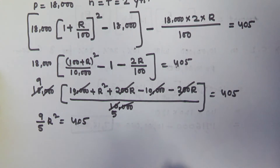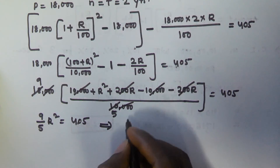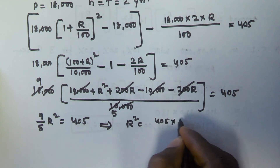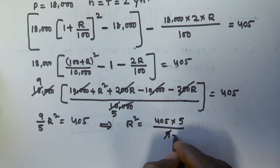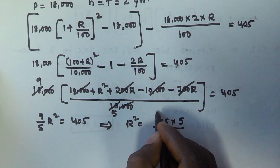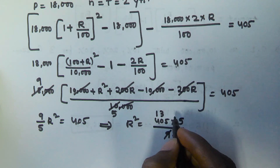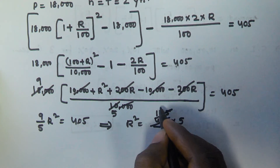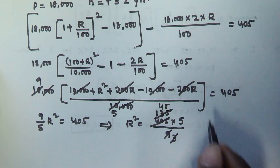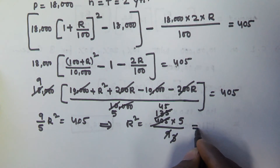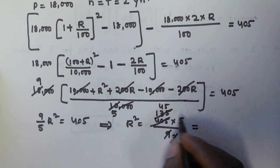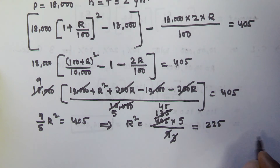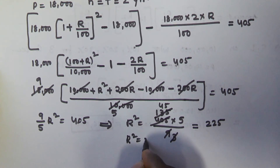So R² equals 405 multiplied by 5/9. Calculating: 405 × 5 = 2025, divided by 9 gives 225. Therefore R² equals 225.